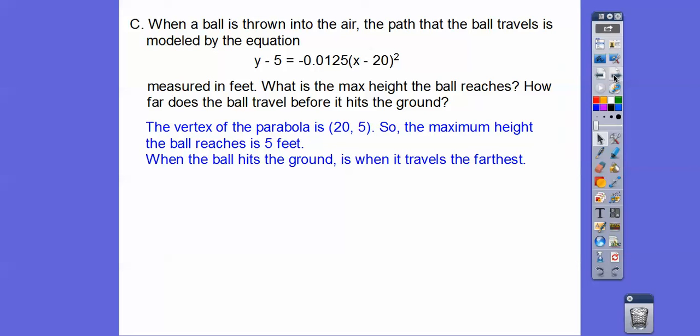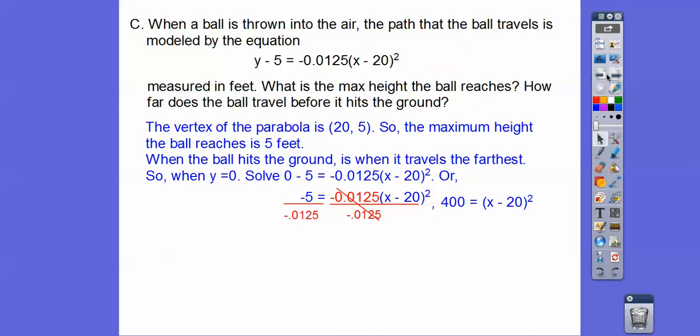So when will the ball hit the ground? When it travels the farthest. So it hits the ground when Y equals 0. So we substitute in Y equals 0 right there. So 0 minus 5 is negative 5, and then we're going to solve this equation to find out our X distance to figure out how far it went. All right, so here I'm going to divide both sides by negative 0.125 to get rid of this. So negative 5 divided by negative 0.125 is 400. I had to use a calculator right there. So now we've got 400 equals something squared. So we're going to square root both sides. Don't forget your plus or minus.